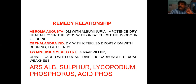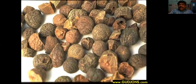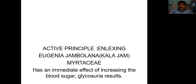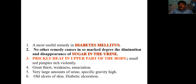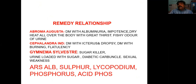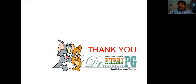In conclusion, regarding Syzygium jambolanum: the seeds are used for medicine, the active principle is jamboline, and the family is Myrtaceae. It is specifically indicated for diabetes mellitus with sugar in the urine and prickly heat in the upper part of the body — small red pimples which itch violently with severe itching. These are the most important things regarding Syzygium jambolanum. Please do read Materia Medica for further details. Thank you.